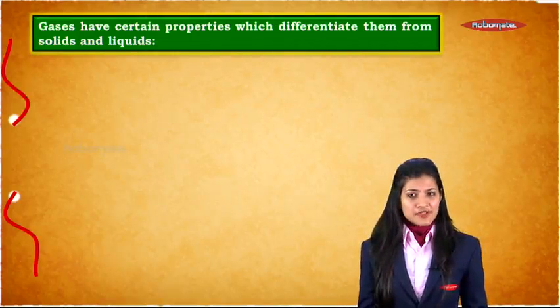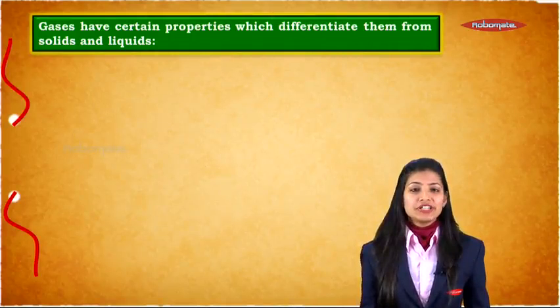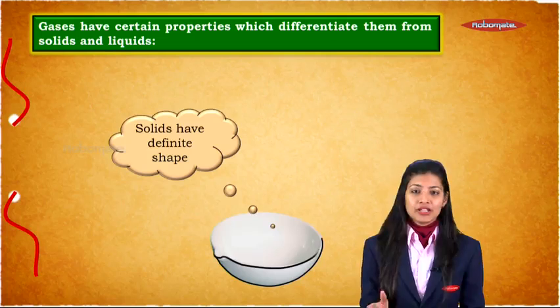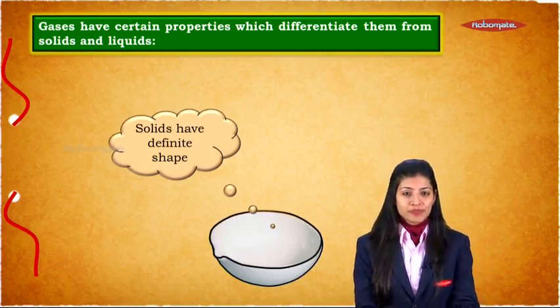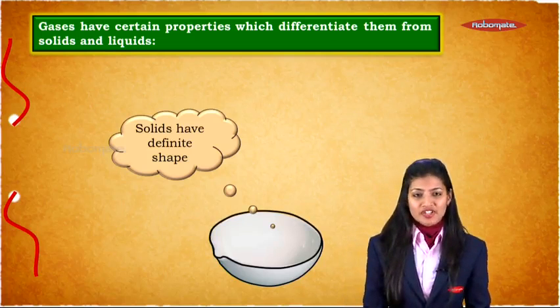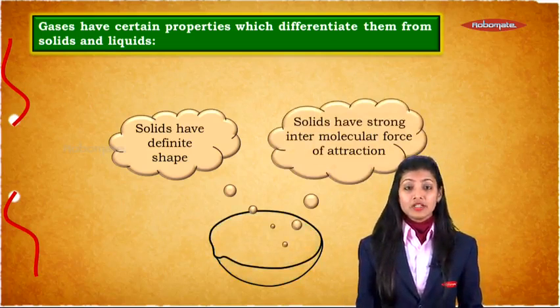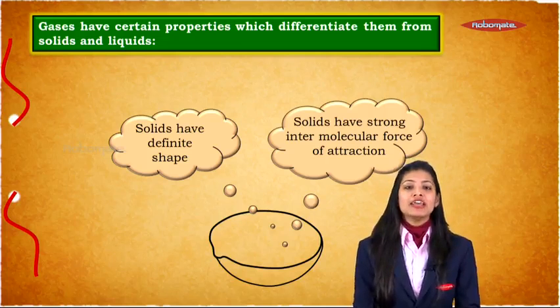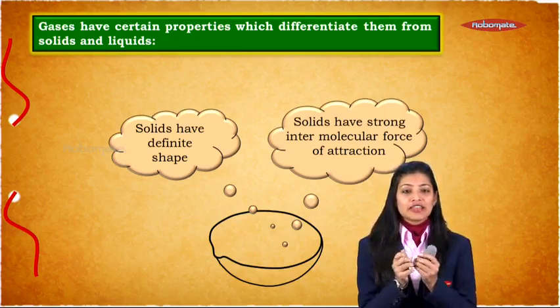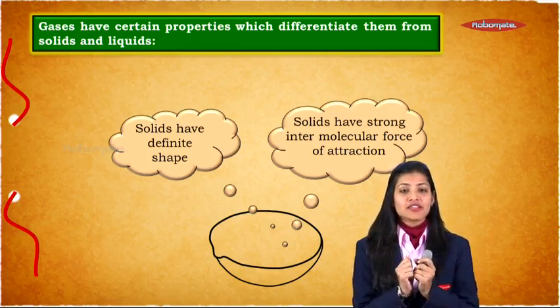Our gaseous substances have certain properties which differentiate them from solids or even liquids. For example, let us consider the shape. We all are already aware that solids have a definite shape. Reason is because solids have strong intermolecular force of attraction. Owing to that, the particles cannot move and their shape remains fixed.